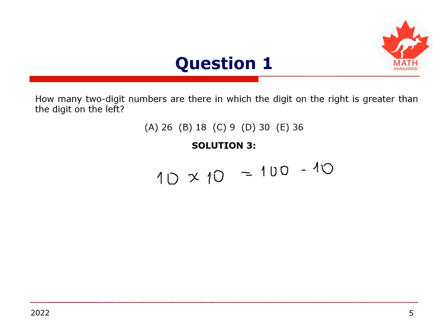Therefore, we take away 10 here, which gives us 90. Then, among the remaining 90 numbers, exactly half of them have their units digit greater than their tens digit. So we divide 90 by 2, and we get 45.